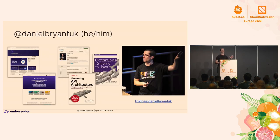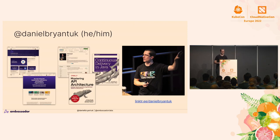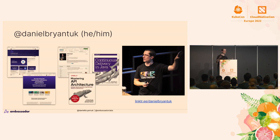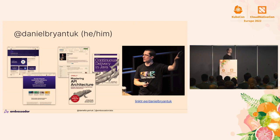Very briefly, I'm at Daniel Bryant UK on most of the interwebs — Twitter, LinkedIn, GitHub, all the good places. I am head of DevRel at Ambassador Labs. My background is Java developer. I moved into solution architecture, then into ops. Built a bunch of platforms on Mesos and Kubernetes. Made a bunch of mistakes, had a few successes. I love sharing my knowledge, writing books with friends, and I'm on InfoQ and The New Stack a lot as well.